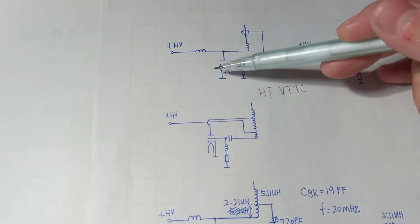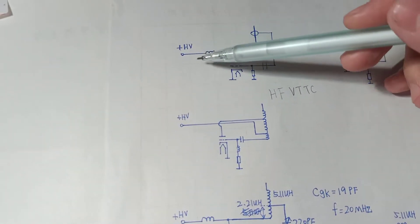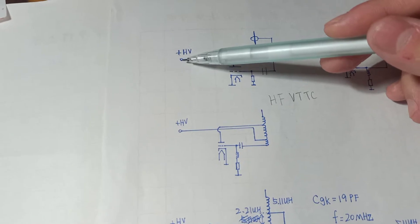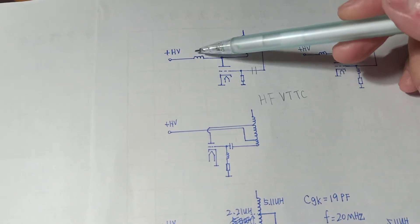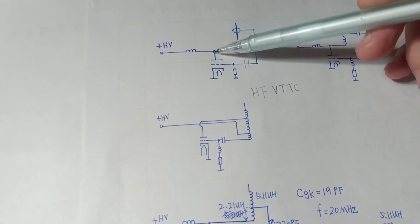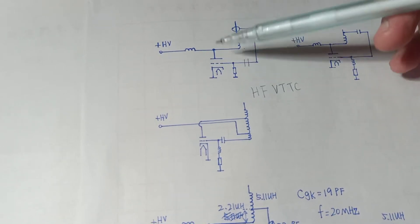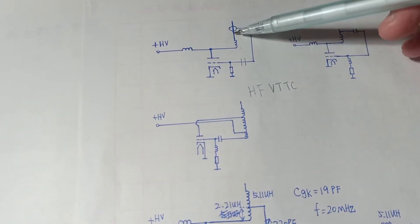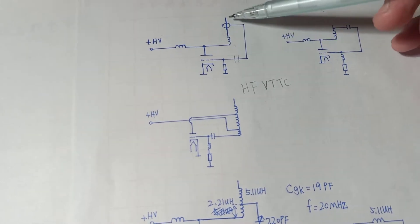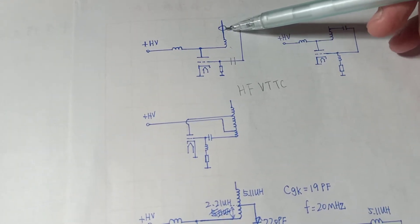This one here is the vacuum tube, a triode. The high voltage power source goes through an RF choke to the tube's plate or anode, and also to the main resonant coil here. This one here is a feedback coil.